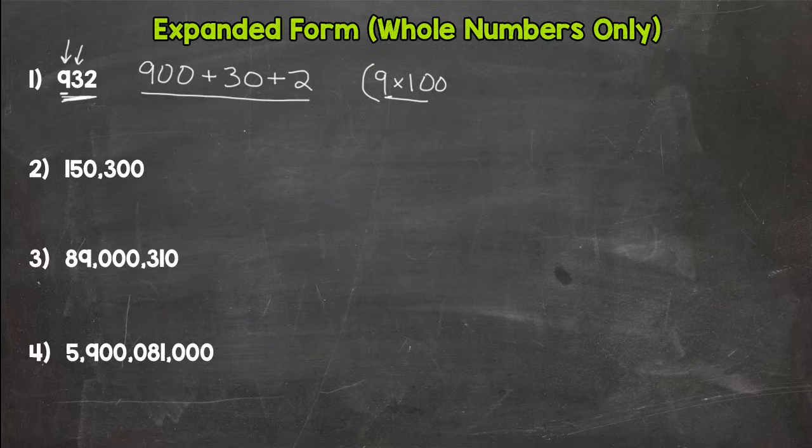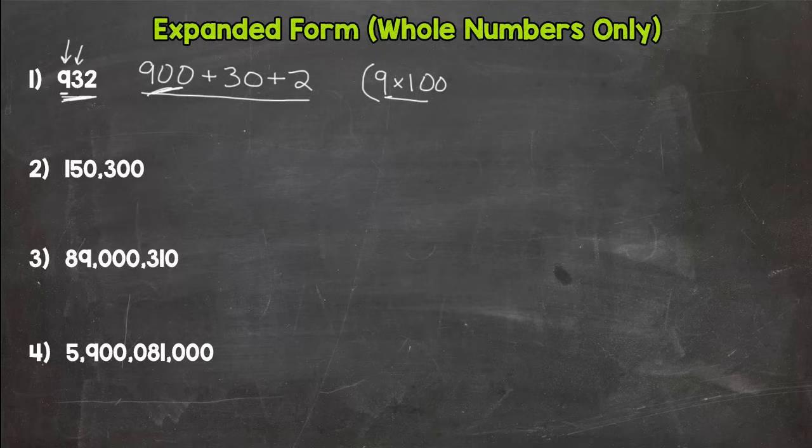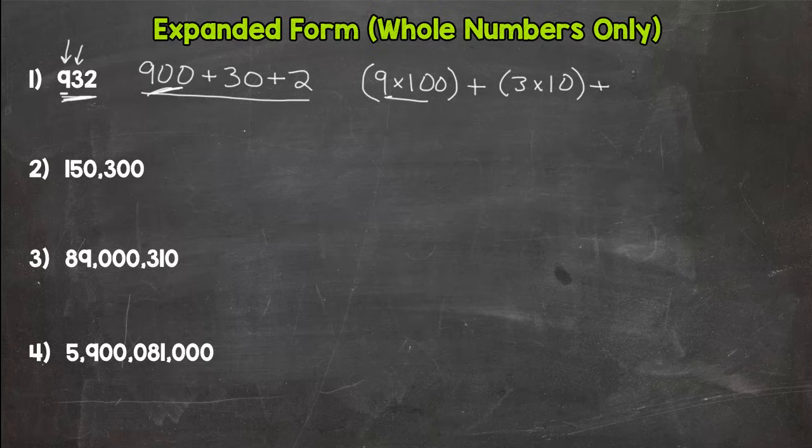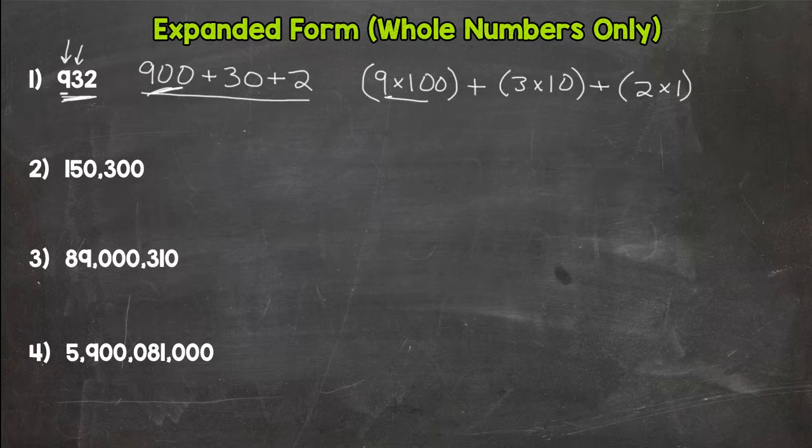So really we wrote the same thing, it's just a different way of putting it. End your parenthesis, plus we have a 3 in the tens place. Done with the 3. Plus a 2 in the ones place. Boom, you're done. You got all three digits: our 9, our 3, and our 2.